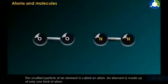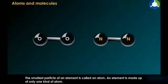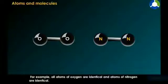And molecules. The smallest particle of an element is called an atom. An element is made up of only one kind of atom. For example, all atoms of oxygen are identical and atoms of nitrogen are identical.